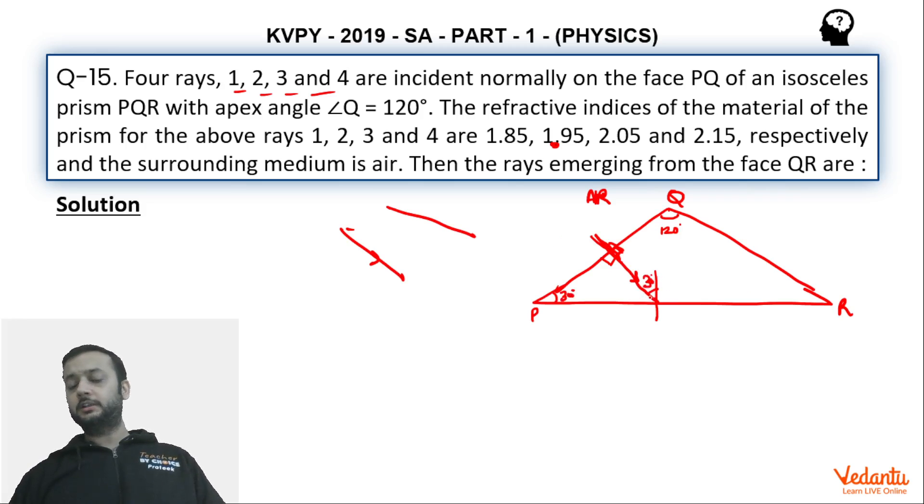That means all the rays are going to strike the face PR at an angle of 30 degrees. Are you clear till here? So saari rays 30 degree pe strike karne wali hai. I hope you understood. If all the rays are going to strike at 30, so that means jin rays ka critical angle 30 se chota hai, jin rays ka critical angle 30 se chota hai, un rays ka toh yaha pe TIR ho jayega. So those rays which have got critical angle less than 30 will suffer TIR over here and those rays which have got critical angle more than 30, unka yaha pe refraction ho jayega.